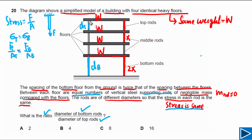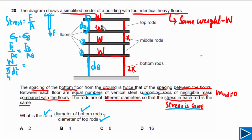Looking at the top rod, it is only supporting one floor, so the force acting on the top rods equals W. The cross-sectional area of the top rods can be written as (π/4)dt². For the bottom rod, it is supporting four floors — one, two, three, and four — each of weight W, so the force is 4W. Its cross-sectional area is (π/4)db².